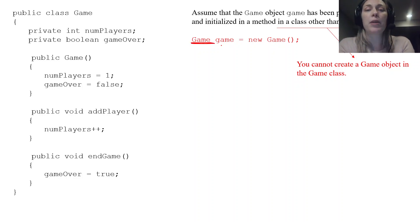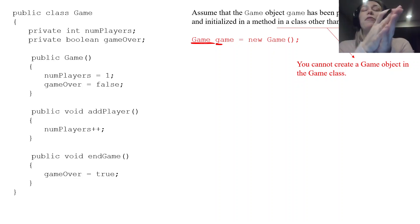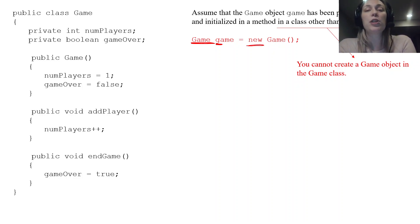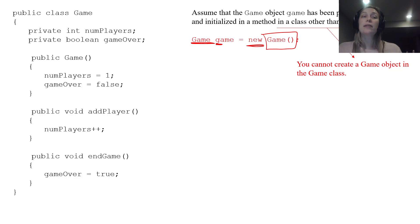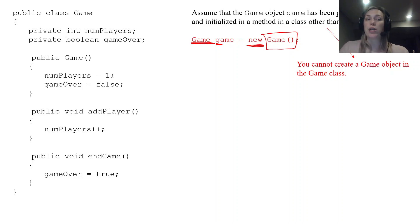The capital G references the class and lowercase g is our reference variable. We use the new keyword and the default constructor. Notice this class did not have a parameter constructor — those are not necessary, though they can be useful. This code uses the default constructor where numPlayers equals one and gameOver equals false.